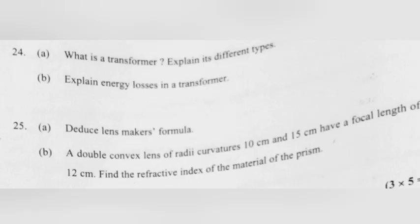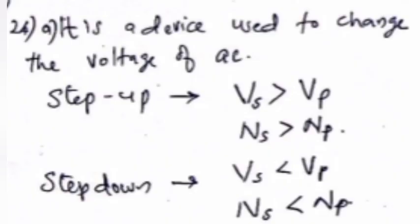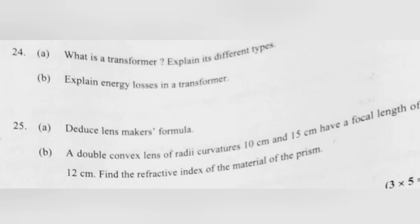What is a transformer? Explain its different types. A transformer is a device used to change the voltage of AC. Step-up transformer: Vs > Vp, Ns > Np. Step-down transformer: Vs < Vp, Ns < Np.